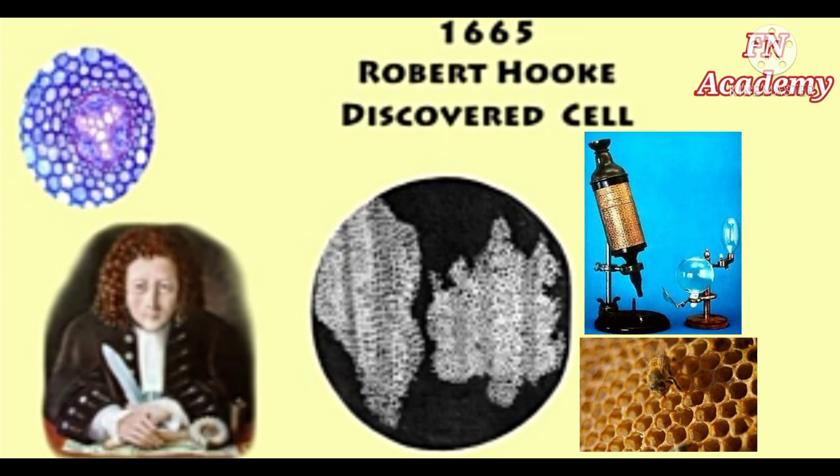So how were cells discovered? In 1665, Robert Hooke discovered cells. He observed dead cells within the cork of the bark of a tree using a basic microscope. He observed empty spaces contained by a wall and named them cells because they resembled small compartments — something similar to a honeycomb structure.